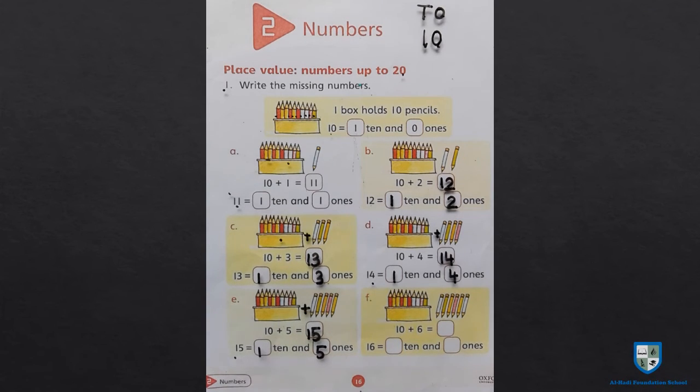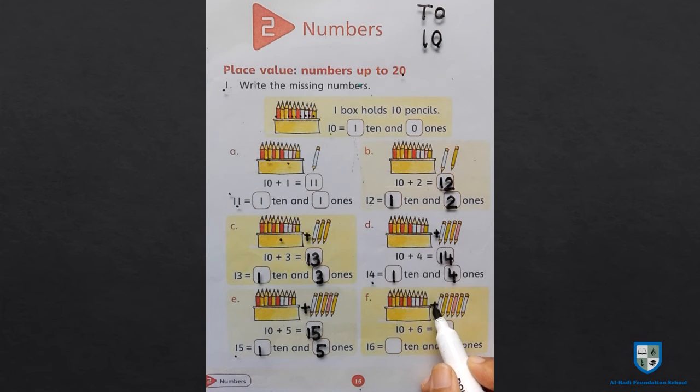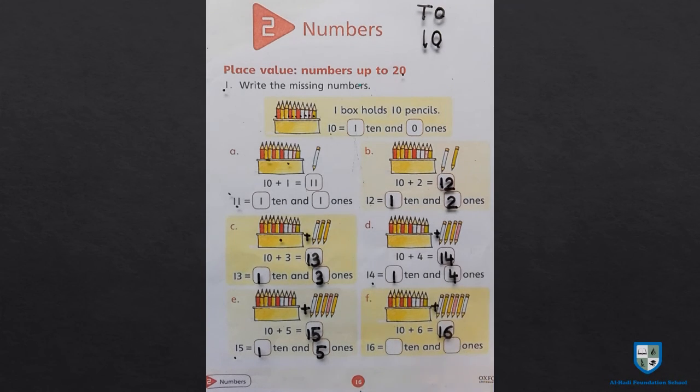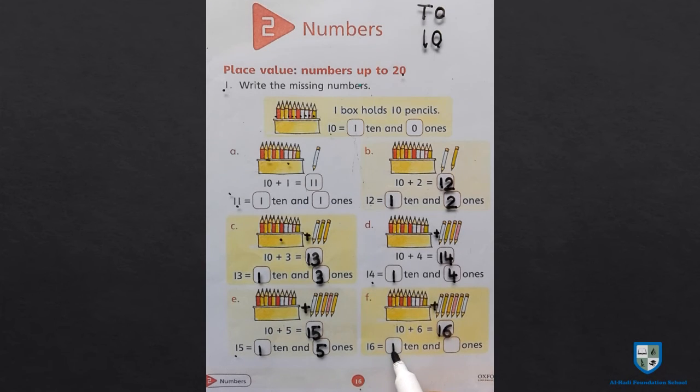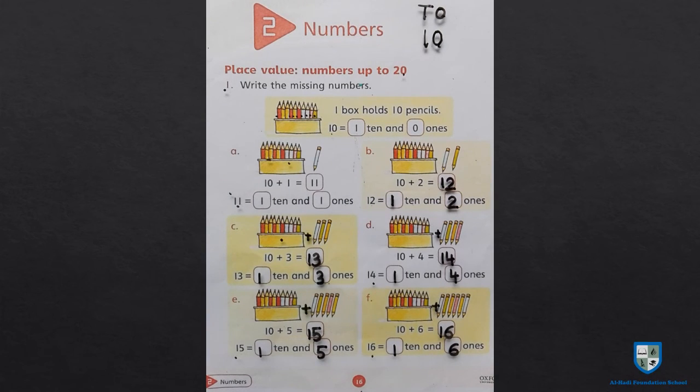Next F: 10 plus 6. अब हमने 10 में 6 पैंसिल को प्लास करना है. 10 plus 6 is equal to 16. 16 में 1 ten है और 6 ones है. 1 ten and 6 ones is equal to 16. इसी तरह हमने page number 16 को पूरे solve करना है.